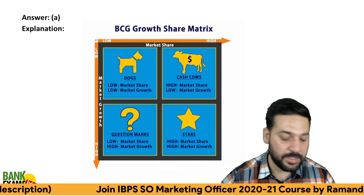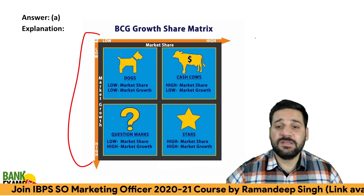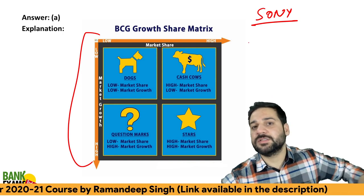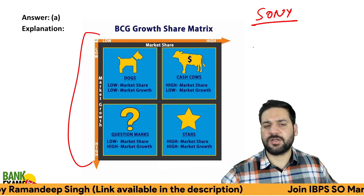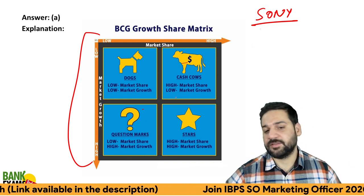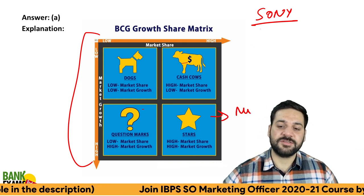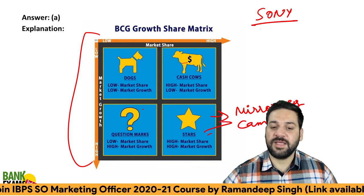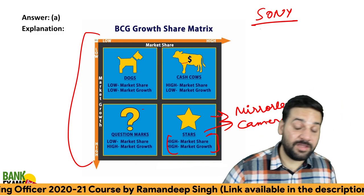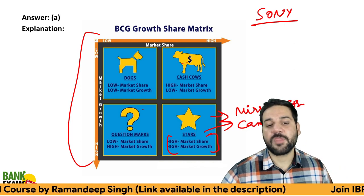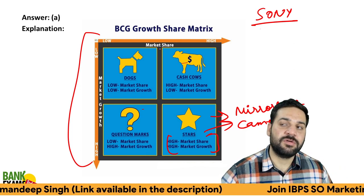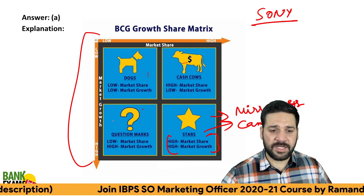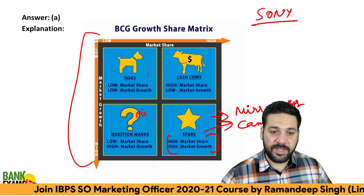The BCG matrix is an important topic — please give it a look. Let's say there is a company, Sony. It has many products: mobiles, cameras, TVs, sound recorders. You can plot Sony's products on the BCG matrix. Sony's mirrorless cameras have high market share and a huge growth rate, making them a Star. Sony mobiles have a very low market share but high market growth rate, so mobiles is a Question Mark.